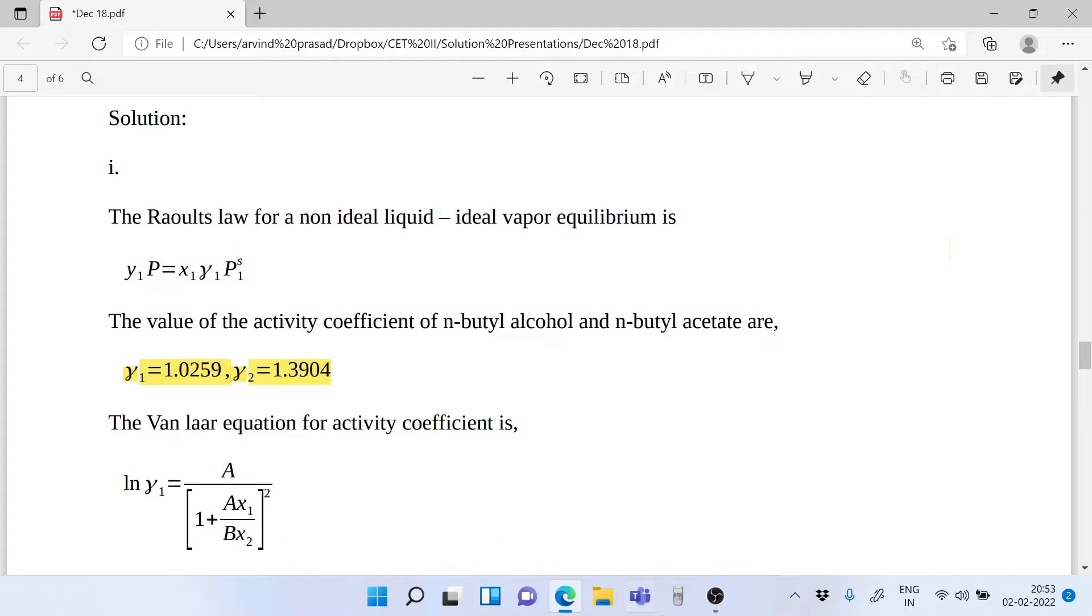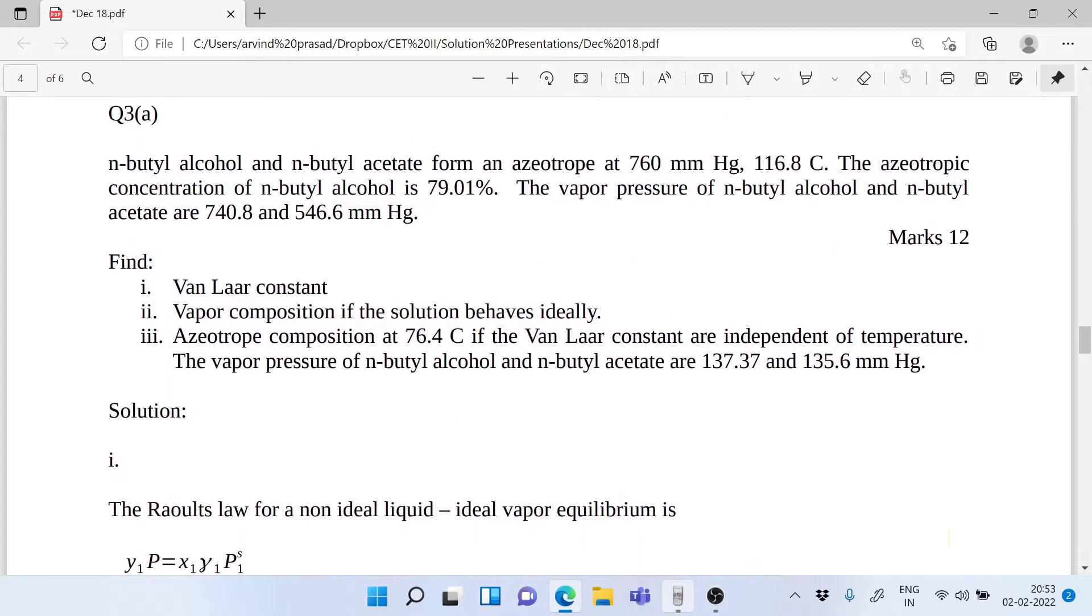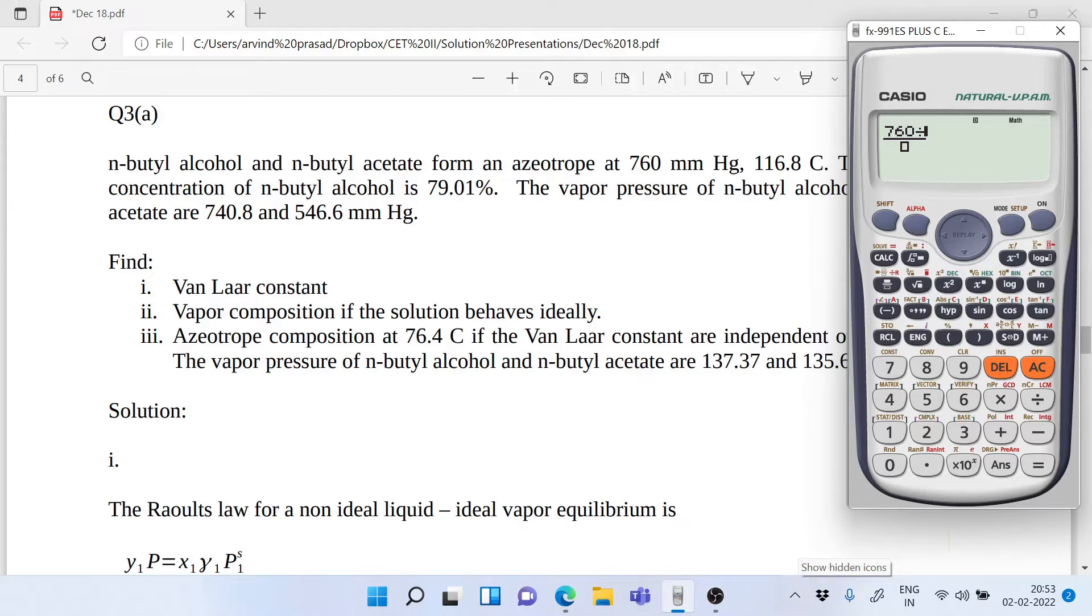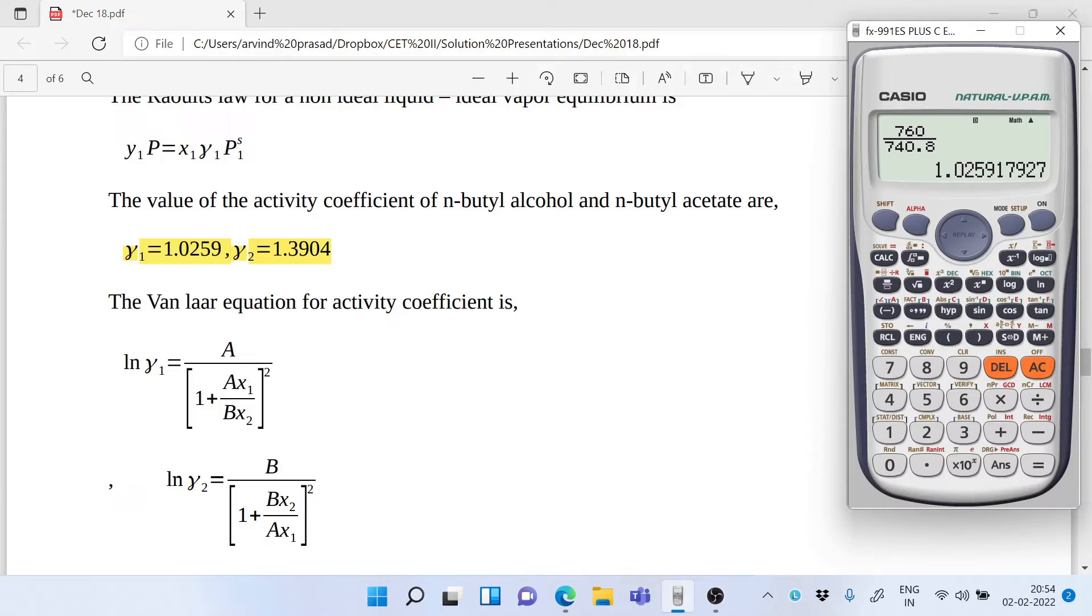Let's demonstrate one such calculation. For the demonstration, P is 760 mmHg divided by P₁ˢ which is 740.8. So that's 760 divided by 740.8, and that's your answer 1.0259. So that's your answer, 1.0259, and I have done the same kind of calculations for γ₂ also.